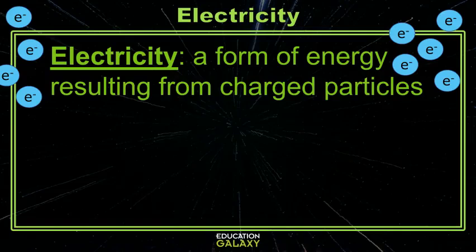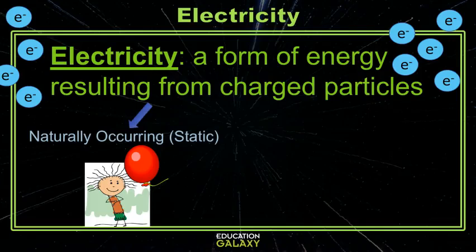Electricity is a form of energy resulting from charged particles. These charged particles are called electrons. Electrons can either become charged naturally, like static when you rub a balloon on your head. Static electricity is when electrons hop back and forth to make an electric force.